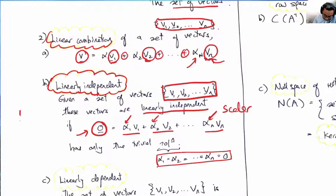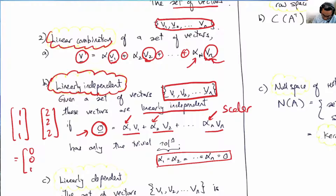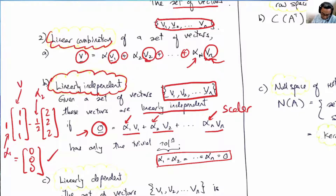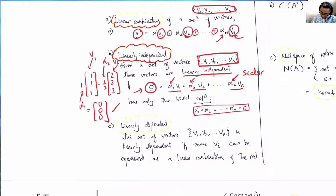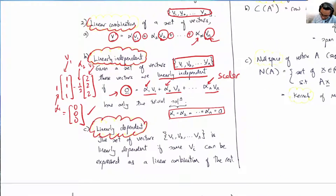For example, if we have vector [1,1,1] and vector [2,2,2], to get [0,0,0] one way is: 1 times [1,1,1] plus negative one-half times [2,2,2] equals [1,1,1] minus [1,1,1] equals [0,0,0]. The coefficients alpha 1 and alpha 2 are not all zero, so there is a way to linearly combine V1 and V2 to get the zero vector without all scalars being zero. Equivalently, the second vector [2,2,2] is just 2 times the first vector. So V1 and V2 are linearly dependent.